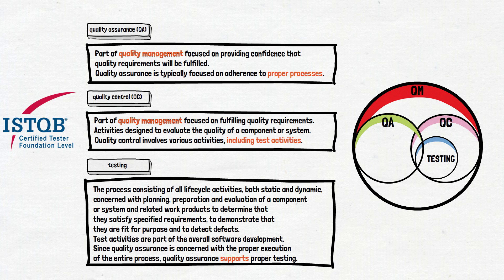Based on that, the entire schema looks something like this: both QA and QC are parts of QM, but QC is not part of QA — QA just supports QC. Because QA is concerned about all processes related to quality, testing is part of QC and is also supported by QA. You can pause the video and check this one more time.